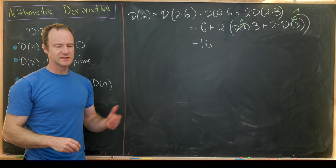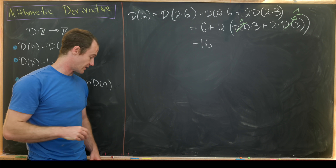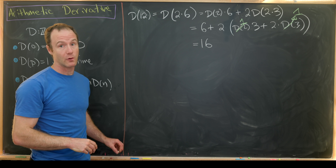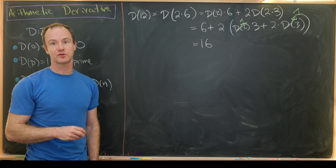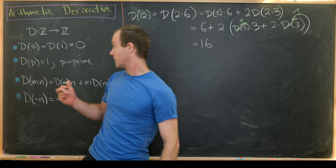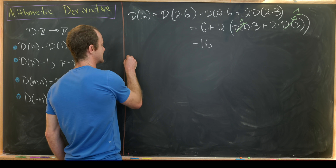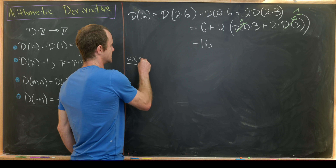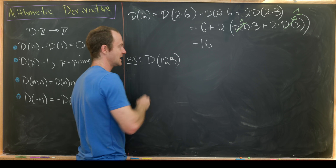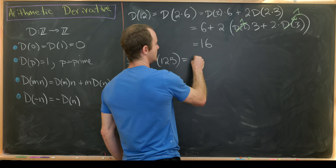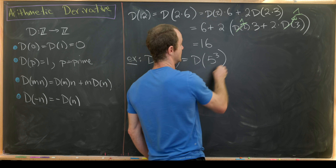One of the first things you learn after the derivative in calculus is the power rule. So let's figure out if there's a power rule for the arithmetic derivative. We'll look at an example first: let's calculate d of 125, which I'm picking because 125 equals 5 cubed.